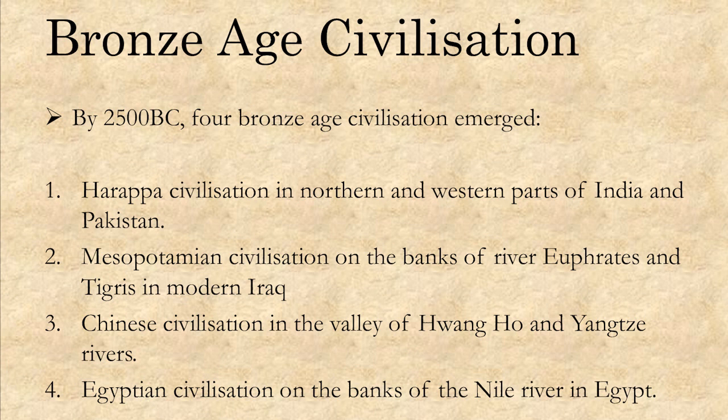The period from 2500 BC is referred to as Bronze Age Civilization. Four major civilizations had emerged in this period: the Harappa Civilization in northern and western part of India and Pakistan; the Mesopotamian Civilization on the banks of rivers Euphrates and Tigris in modern Iraq; the Chinese Civilization in the valley of the Yangtze River; and the Egyptian Civilization on the banks of the Nile River in Egypt. All these major civilizations were developed near a river bank.